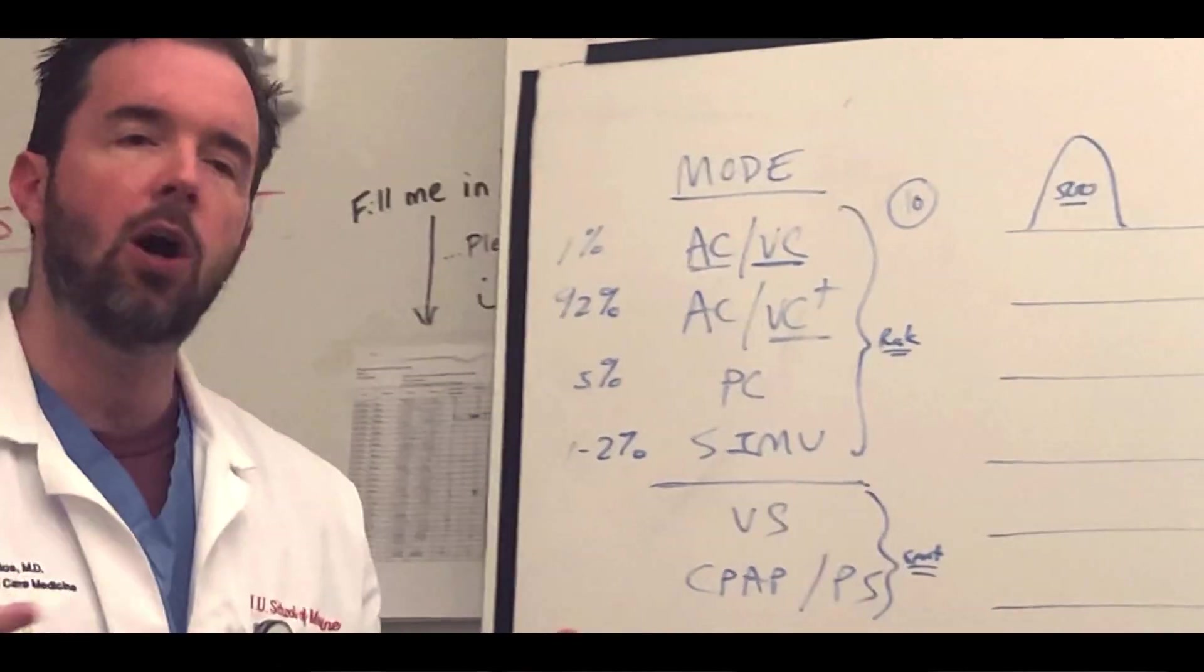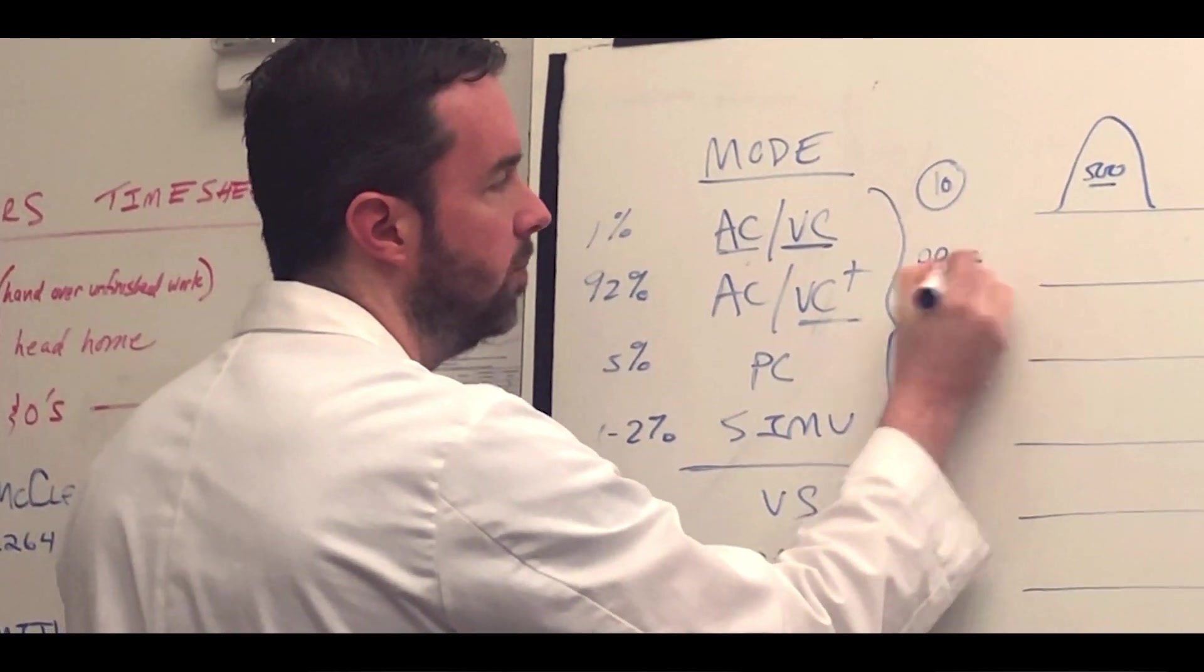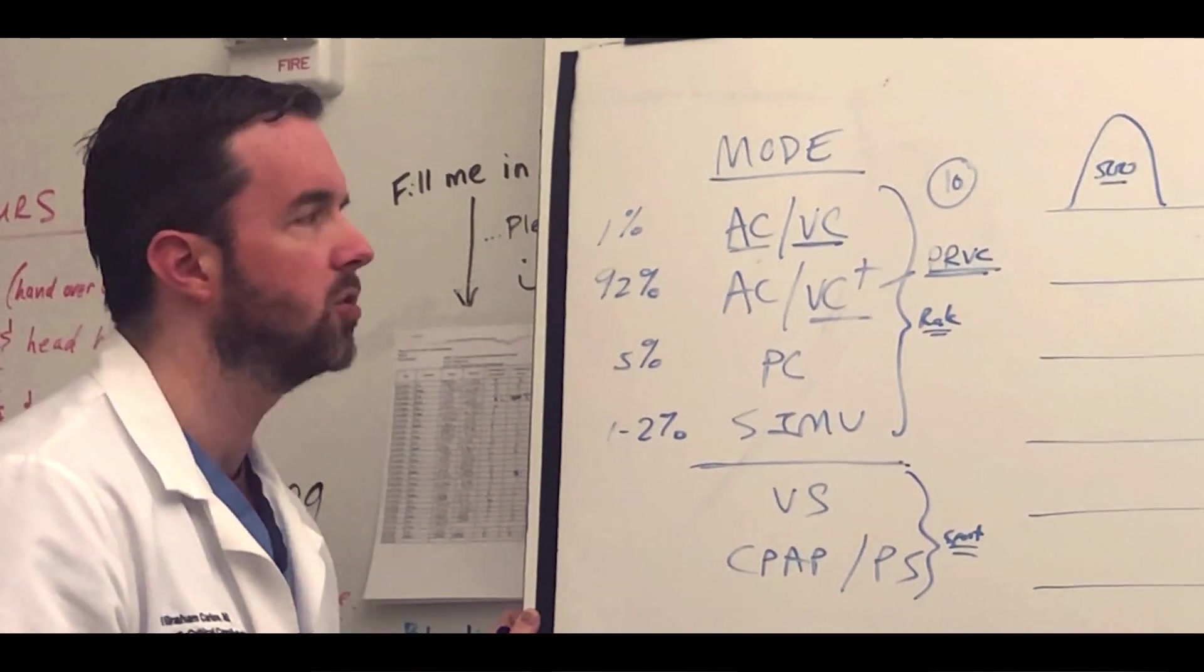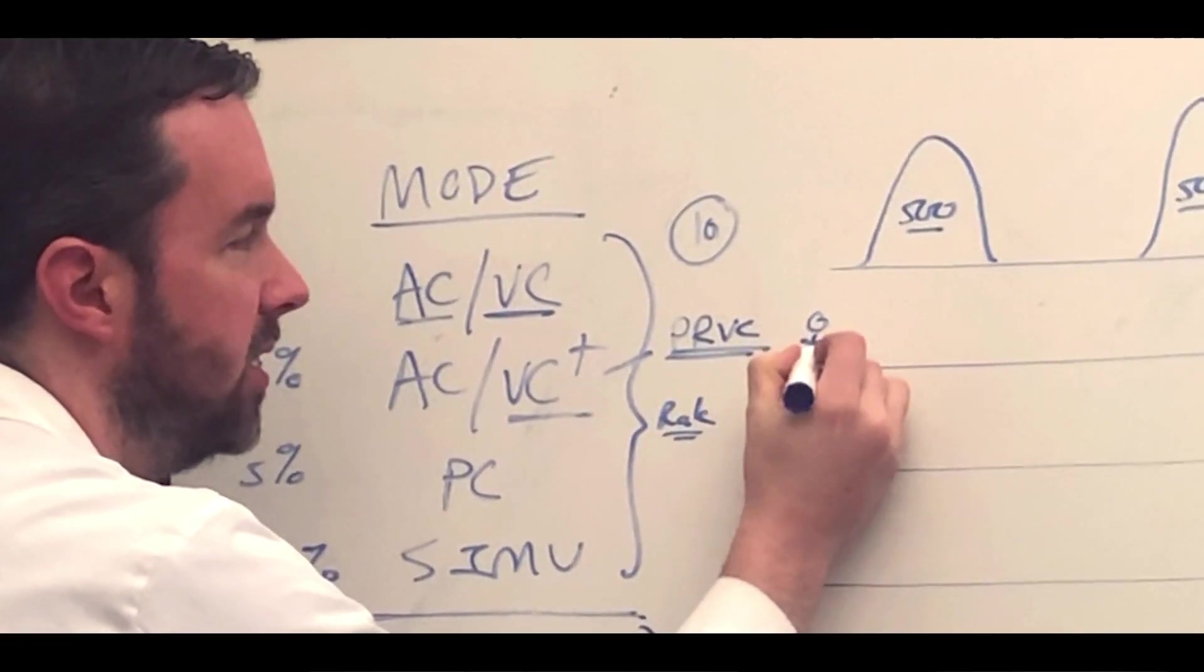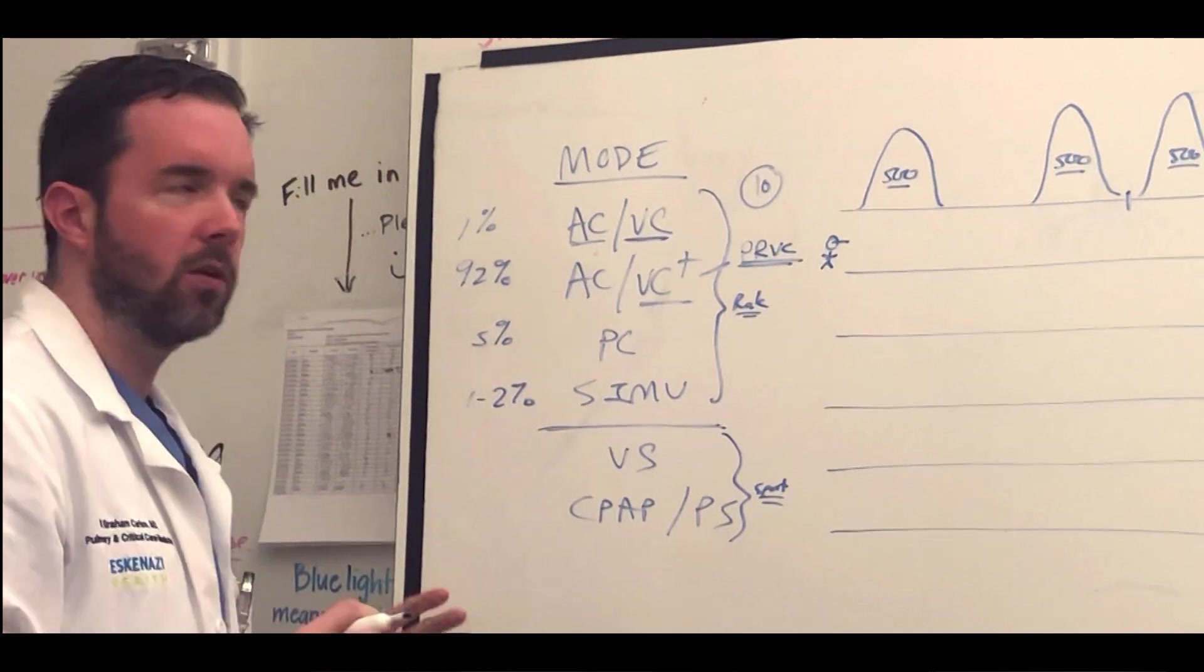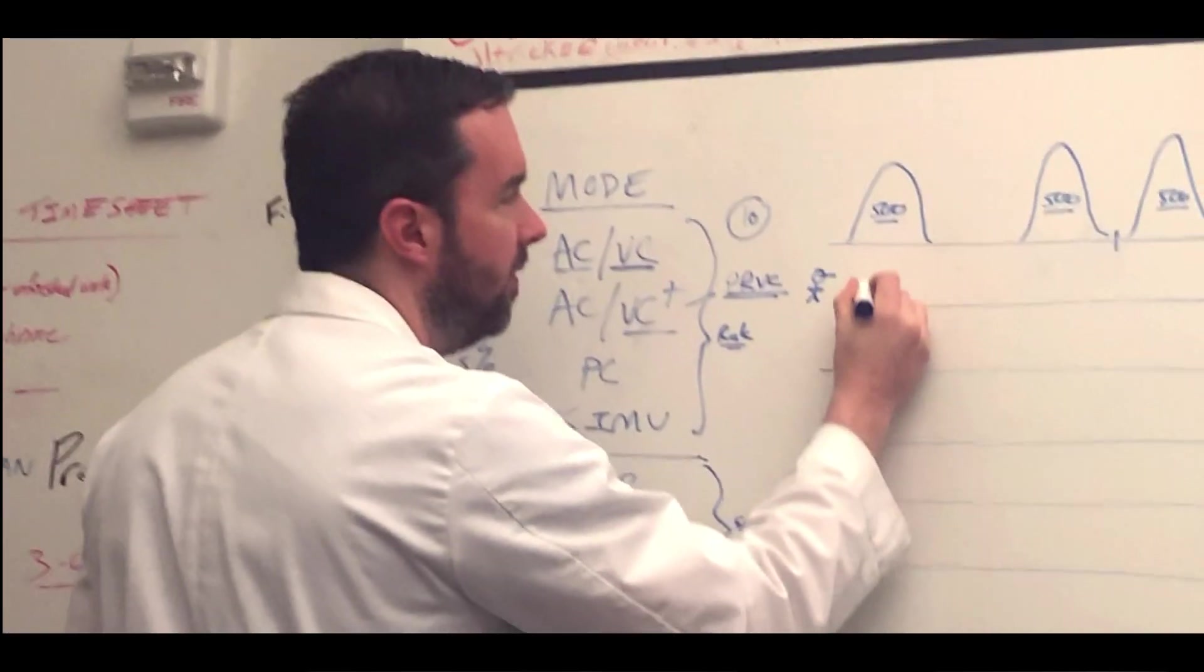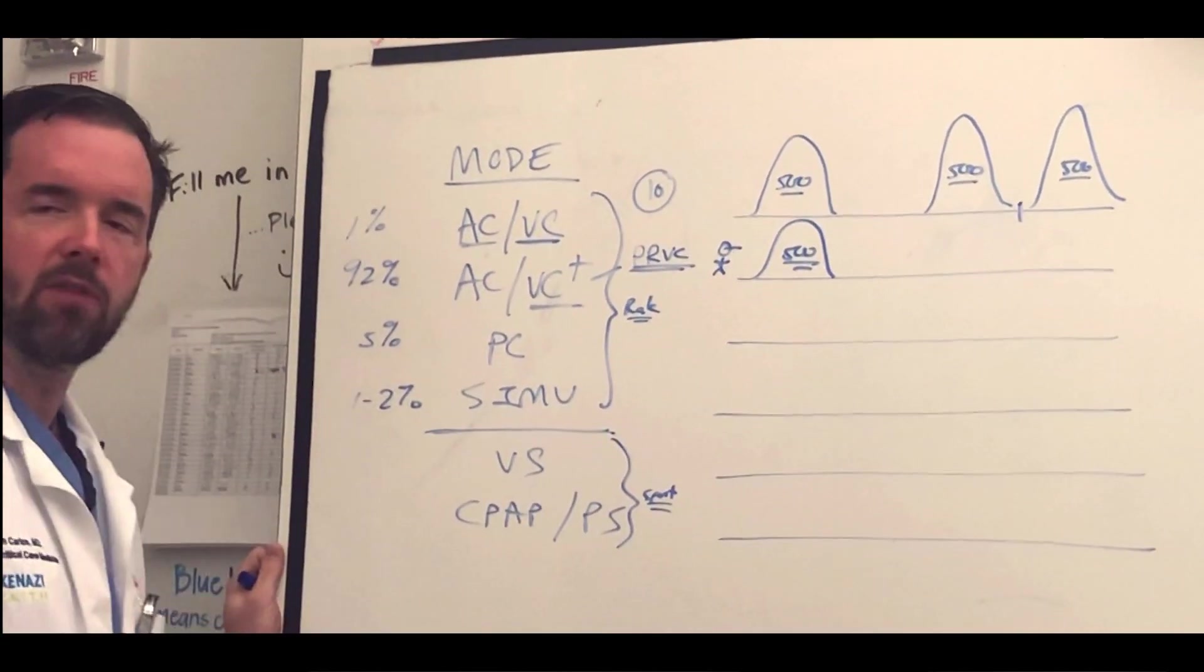And some manufacturers call this PRVC. I'm going to write that down: pressure regulated volume control. They are pretty synonymous, depending on the vent manufacturer you use. In PRVC, it's like there's a little mini RT living inside the vent. And the RT says, all right Dr. Carlos, you set ACVC plus.